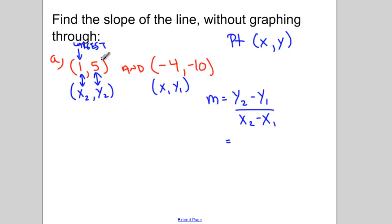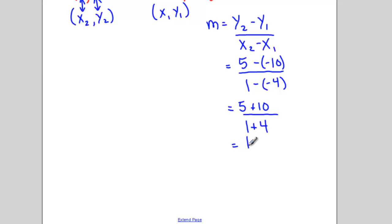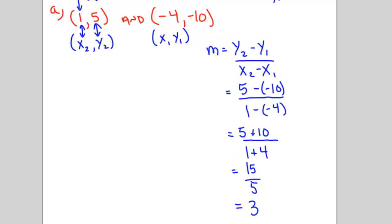So in our equation for slope, we're going to sub in 5 for y2. We're going to sub in 1 for x2. We're going to sub in negative 4 for x1. And now we just need to solve this numerically. So 5 take away negative 10 turns into 5 plus 10. 1 take away negative 4 turns into 1 plus 4. This gives us 15 over 5, which then simplifies to just positive 3. So the slope of the line between the points 1 and 5 and negative 4 and 10 would be 3.